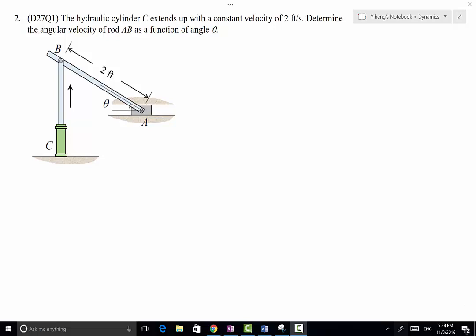In this example, we have a hydraulic cylinder C that extends with a constant velocity of 2 feet per second, which means the linear velocity of point B is going to be constant at 2 feet per second. We need to determine the angular velocity of rod AB as a function of angle theta.